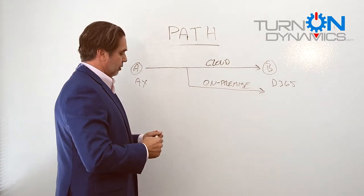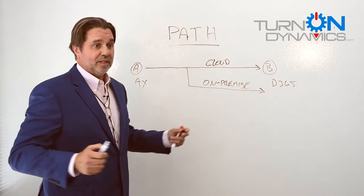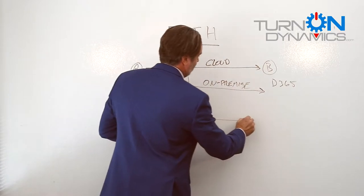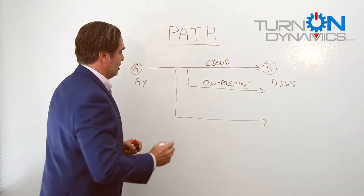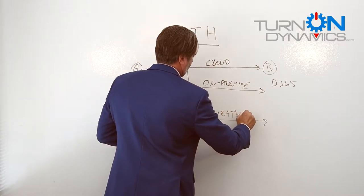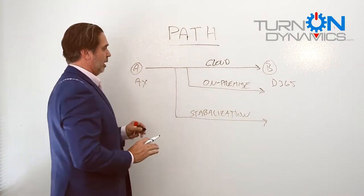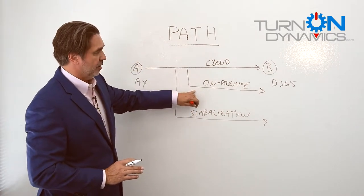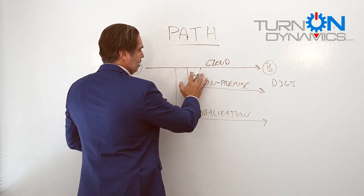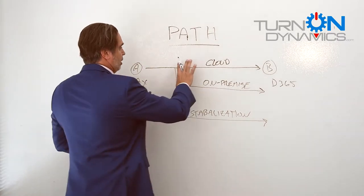The next major surprise was that when people finished analyzing the cloud vs. on-premise option, they looked at something I completely and totally did not expect. What folks did was go a totally alternate route — what I call the stabilization route. Even companies that had the resources and the money to pursue either the cloud upgrade or the on-premise upgrade from AX to D365 decided that the current cost and technology available was too expensive and too untried to go down that route.